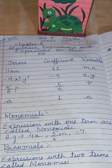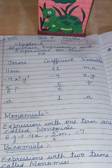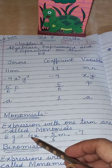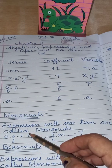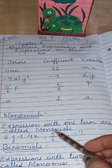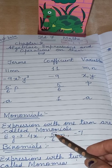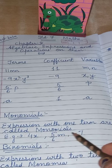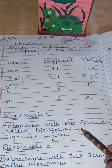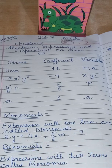Now let's understand monomials. Expressions with only one term are called monomials. For example: 4x — only one term, coefficient and variable. 5/6 m — one term, that is a fraction number and m. Minus 7 — one term, only a coefficient.